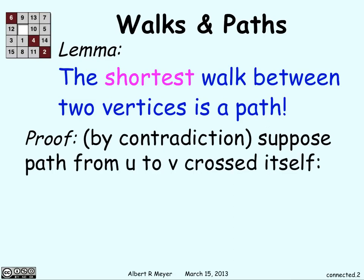Suppose we have some path from u to v, and it crosses over itself. So, here we have u and v, and at some point, you get to c, and you go back to c, and from there you go to v. So, you've gone through some vertex c twice.